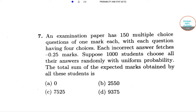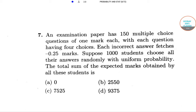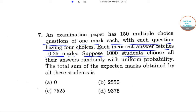An examination paper has 150 multiple choice questions of one mark each, with each question having four choices. Each incorrect answer carries minus 0.25 marks. Suppose 1,000 students choose all their answers randomly with uniform probability. The total sum of the expected marks obtained by these students is what?